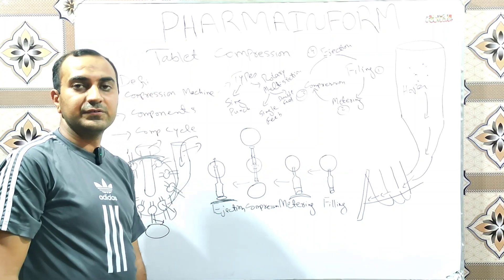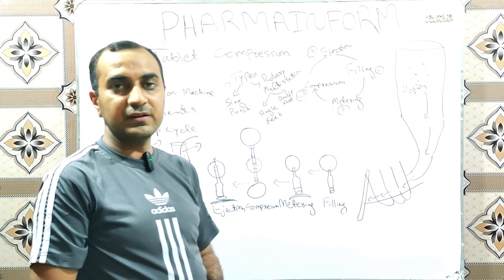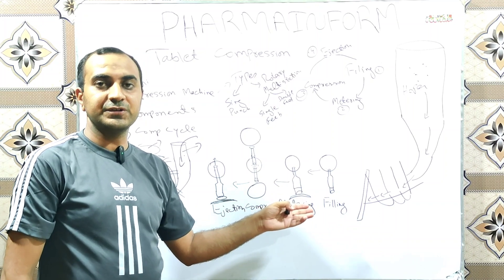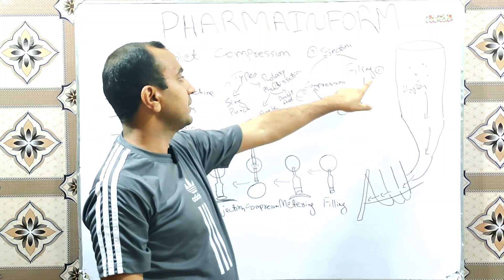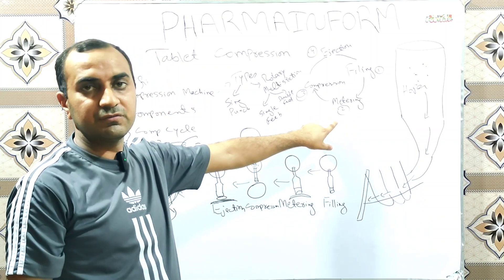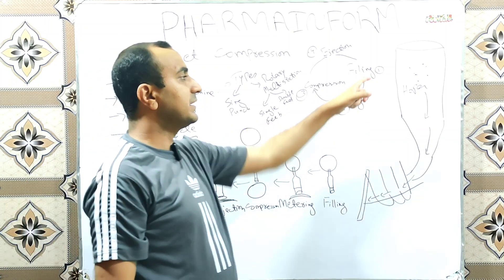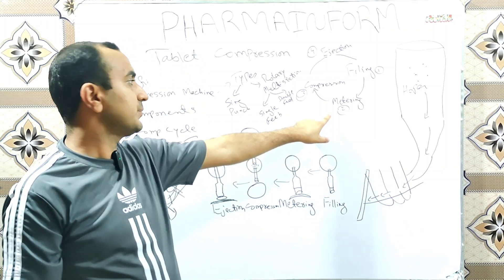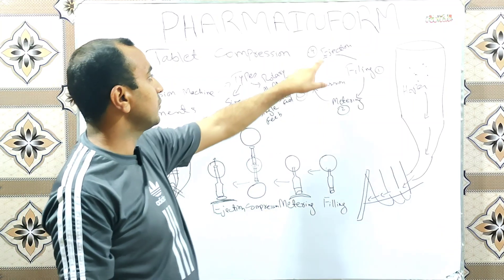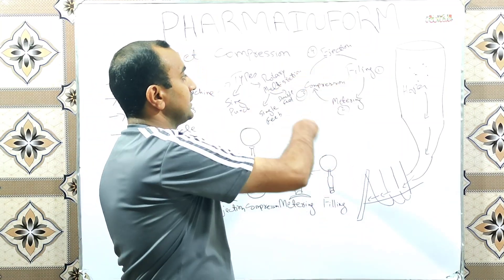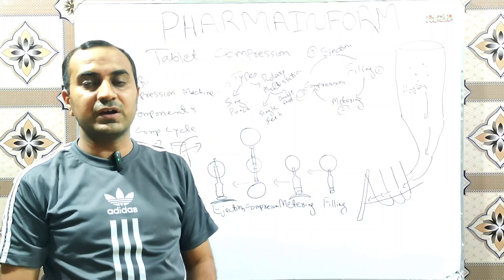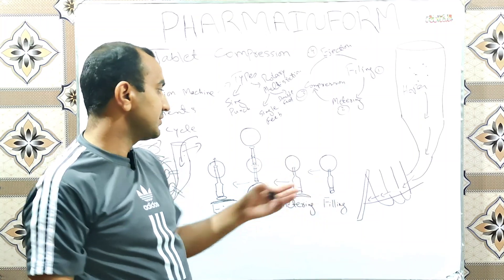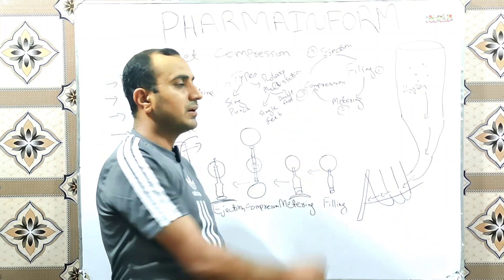The compression cycle is also known as compression stages. There are four stages of compression: first is filling, second is weight adjustment or mattering, third is compression, and fourth is ejection. It is a cyclic process, so it is also known as the compression cycle. Now let's discuss each stage one by one.